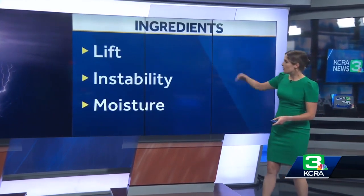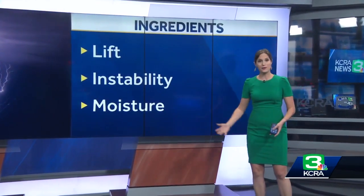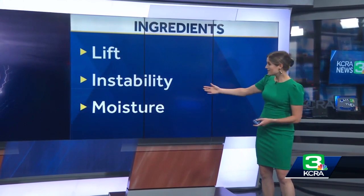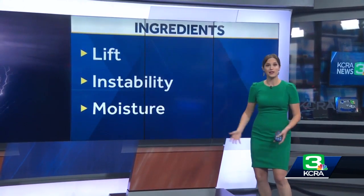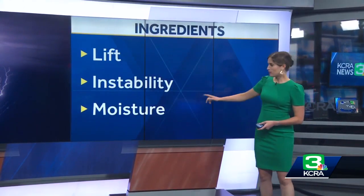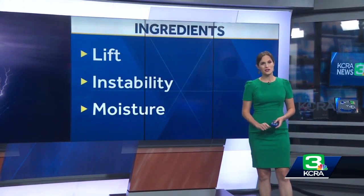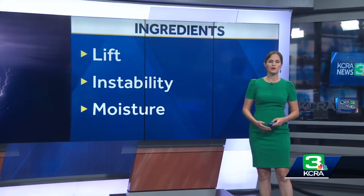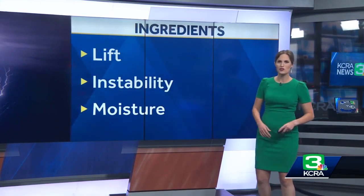There are three main ingredients: lift — you need something to get the air moving upwards; instability — something to keep the air moving upwards; and of course, you need some moisture to form the clouds and perhaps a little bit of precipitation as well.